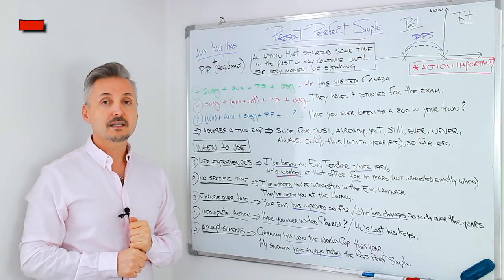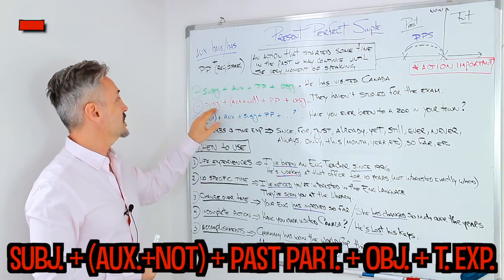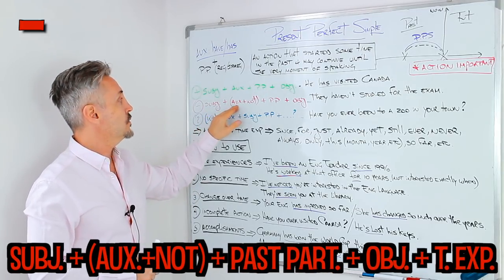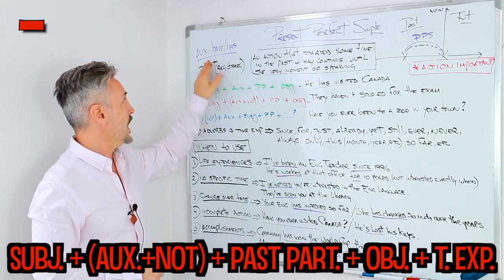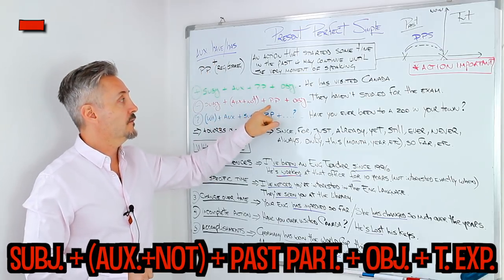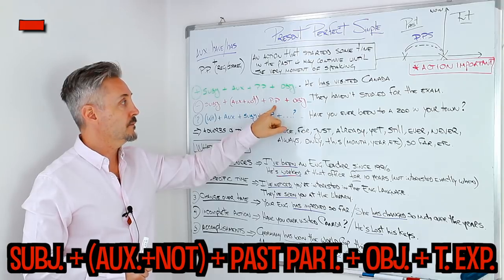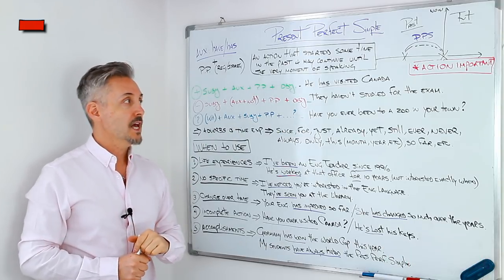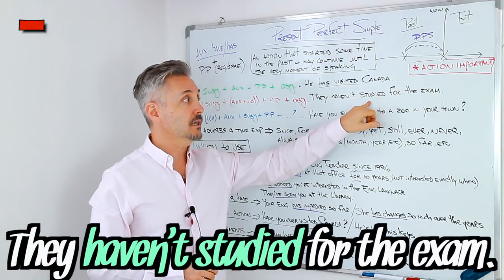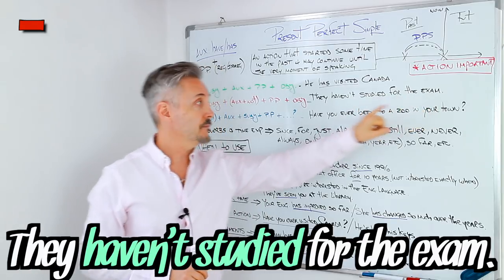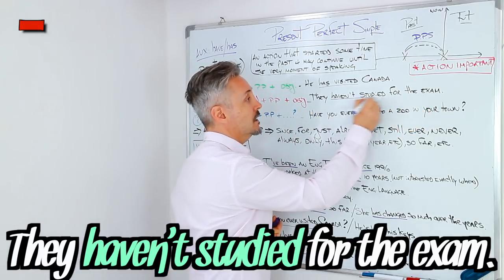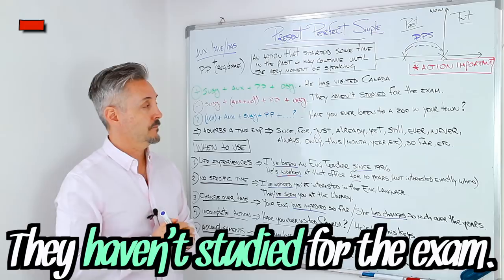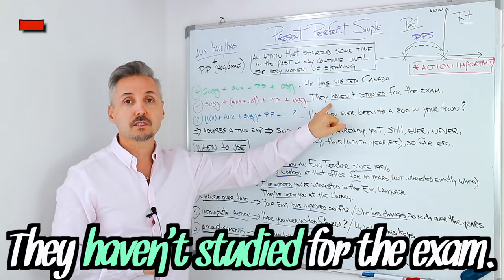The negative sentence is with the subject, then we need the auxiliary plus not, so have or has plus not, then the past participle, and then the object. They haven't studied for the exam. So the action is important, not when.